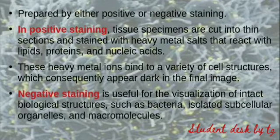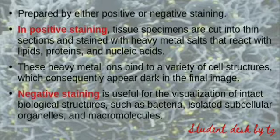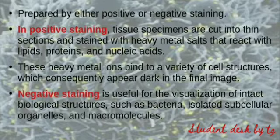If we talk about positive staining: we take a tissue specimen, cut it into thin sections, and stain it with heavy metal salts. These heavy metals react with the lipids, proteins, and nucleic acids present in the specimen. The heavy metal stain binds to a variety of cell structures, which will appear dark in the final image.